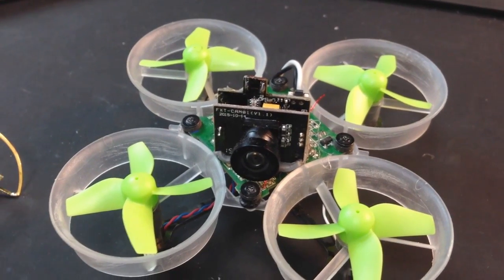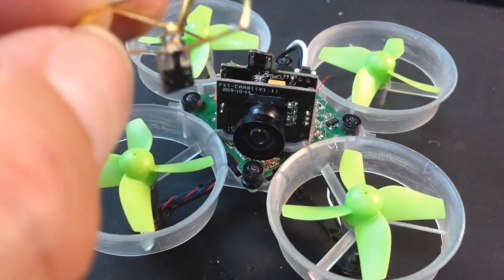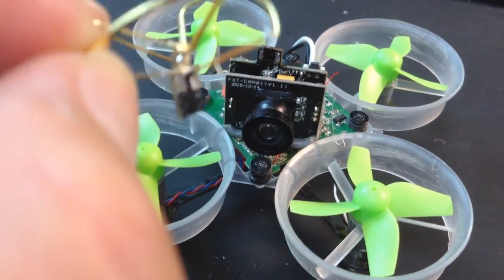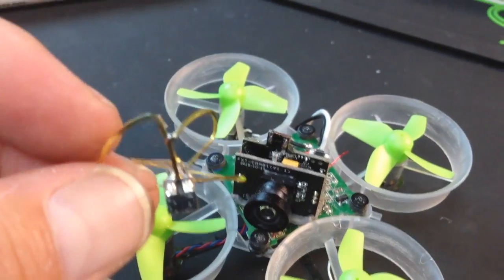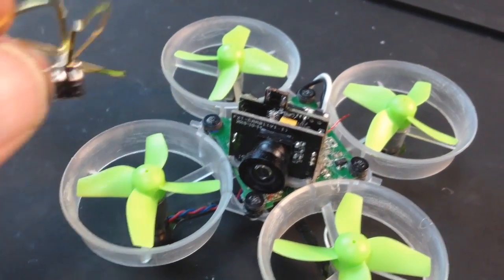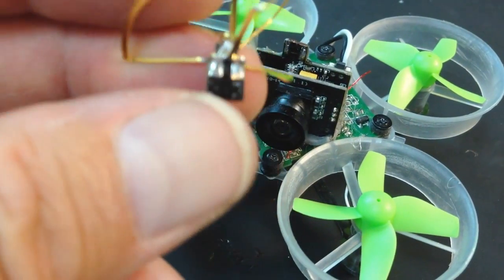Hey guys, this is going to be a quick video. I actually damaged my tiny whoop cloverleaf antenna. It's broken over here and I've been getting some pretty poor reception out of it. I know guys have done a mod to put just a whip antenna on here, so I'm just going to go over how I did that.